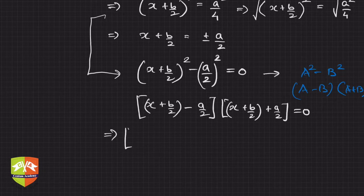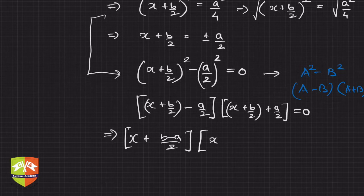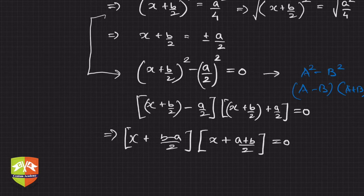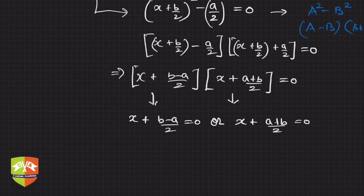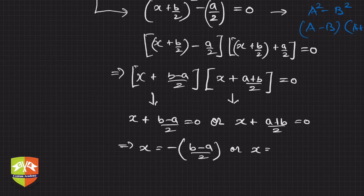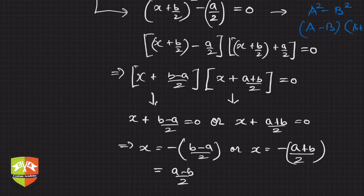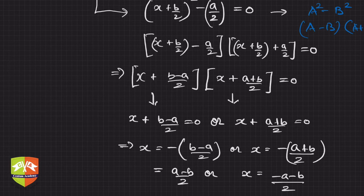Simplifying, we get the two factors: (x + (b − a)/2) = 0 and (x + (a + b)/2) = 0. Setting each factor to zero: x = −(b − a)/2, which gives x = (a − b)/2, or x = −(a + b)/2.